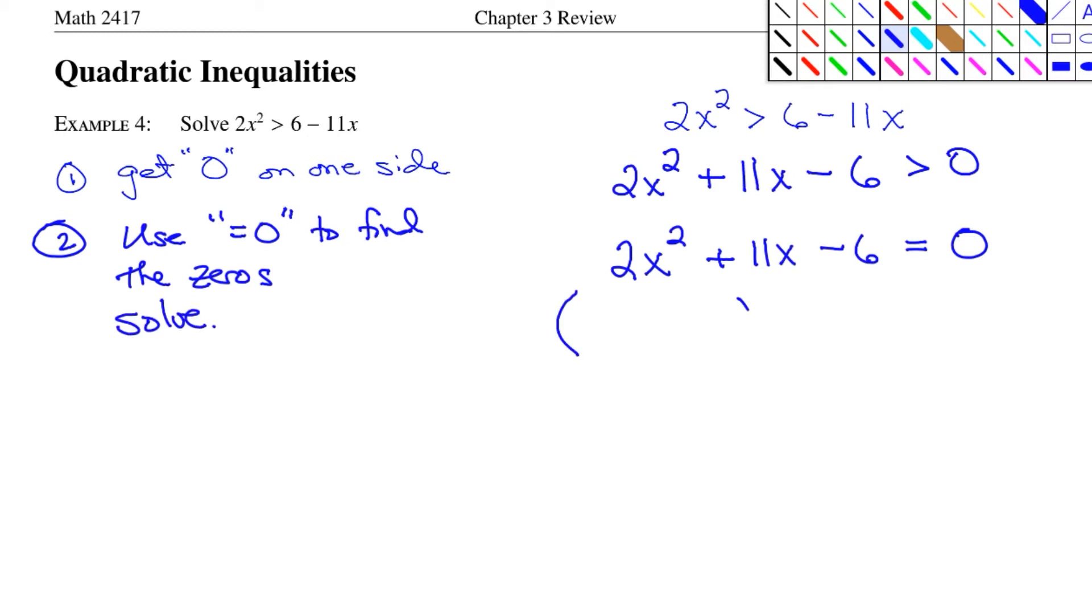Well, this one factors. We get 2x and x, 6 and 1, a plus there and a minus here. And if you set each of these factors equal to zero, you get x equals 1/2 and x equals -6.